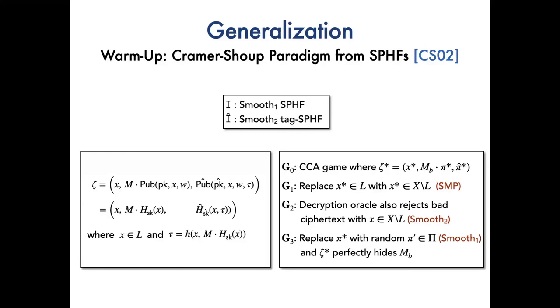The regular SPHF can be regarded as a special case of tag SPHF with empty tag space. The Cramer-Shoup paradigm is based on a smooth one SPHF i and a smooth two tag SPHF i hat. The public key is PK and PK hat. And the ciphertext consists of three parts: the language element X, M times hash value H, and hash value H hat, where the tag tau is the hash value of the first two parts.